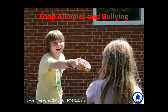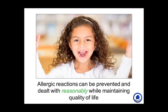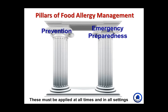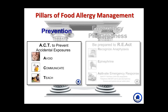Having policies with a hard line on bullying is important — especially food allergy-related bullying, as this can be life-threatening. Allergic reactions can be prevented and dealt with reasonably while maintaining quality of life. We can break down food allergy management into two pillars: the pillars of prevention and emergency preparedness. These pillars need to be applied at all times and in all settings throughout the school. The first pillar of prevention requires us to act to prevent accidental exposures — we need to avoid, communicate, and teach.